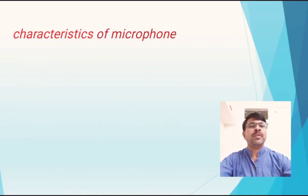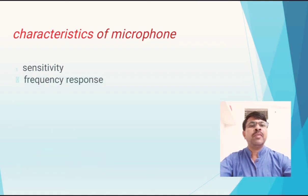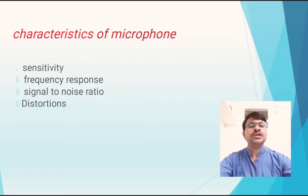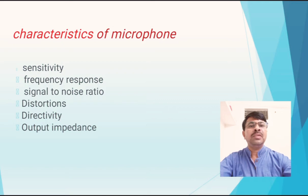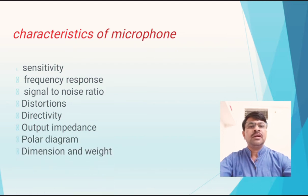Some important characteristics of the microphone — in an exam, two-mark or four-mark questions may be asked on this topic: list the important characteristics of microphones. They are: sensitivity, which is the output voltage of the microphone; frequency response, which is the bandwidth of the microphone; signal-to-noise ratio, meaning the microphone circuit has resistance that creates internal noise; distortions — there are two types: amplitude distortion and phase distortion; directivity, which tells us what type of sound wave force can be applied to the microphone; output impedance, where impedance matching between the two stages is important; polar diagram; and dimension and weight, as various types of microphones are present in the market.